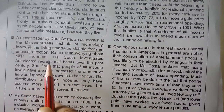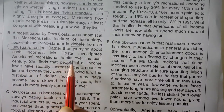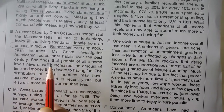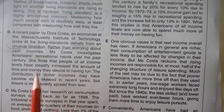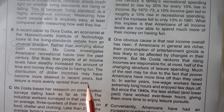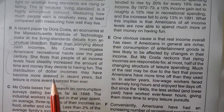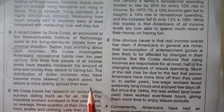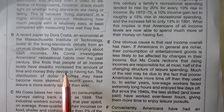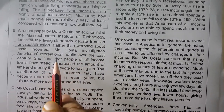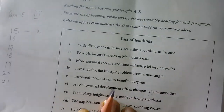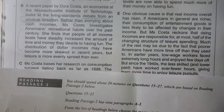Rather than worrying about cash incomes, Miss Costa investigates American recreational habits over the past century. She finds that people of all income levels have steadily increased the amount of time and money they devote to having fun. Like, the distribution of dollar incomes may have become more skewed in recent years, but leisure is more evenly spread than ever. So she is taking the living standards debate from an unusual direction — she investigates recreational habits.